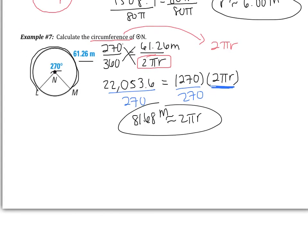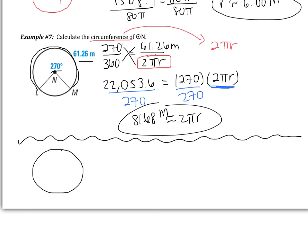Here's one more example for you to try. The arc measures 55 degrees and its length is 9.24. Find the radius. When you come to class tomorrow, I'll be looking for your answer and work. Good luck — see you tomorrow.